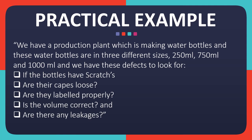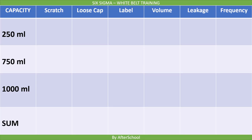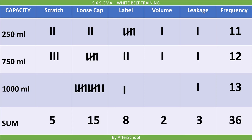The inspector is getting these bottles, looking at the defects, and recording them in the check sheet. For the 250ml bottle: two bottles had scratches, two had loose caps, five had wrong labels, one had incorrect volume, and one had a leakage issue — giving a total of 11 defects. Similarly, the other two bottle sizes had totals of 12 and 13 defects respectively.